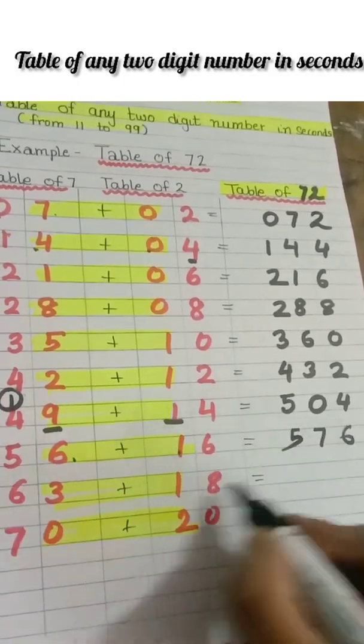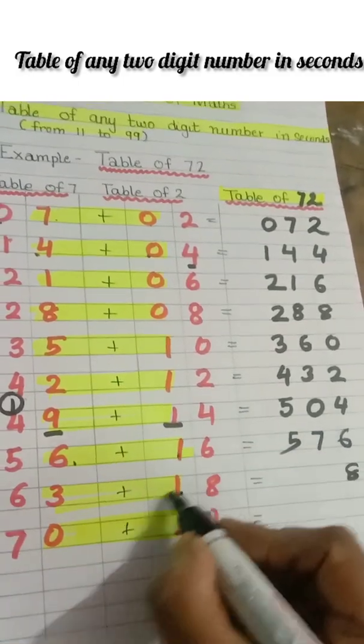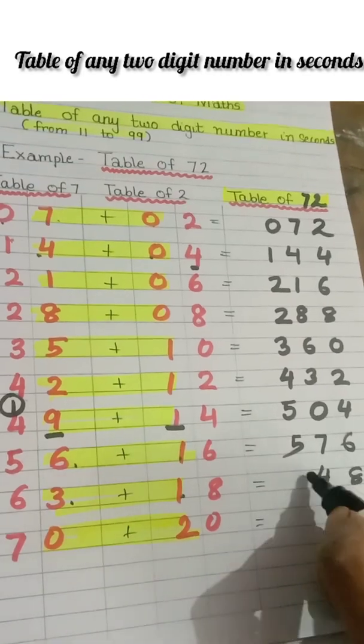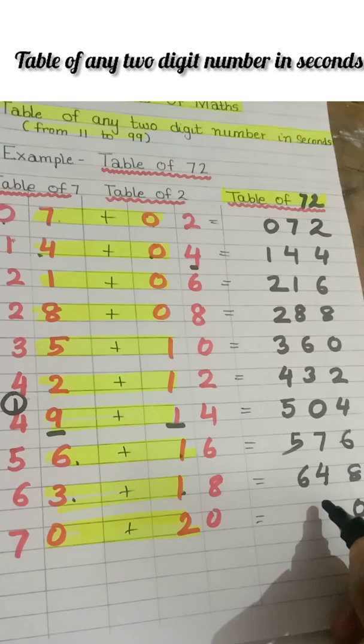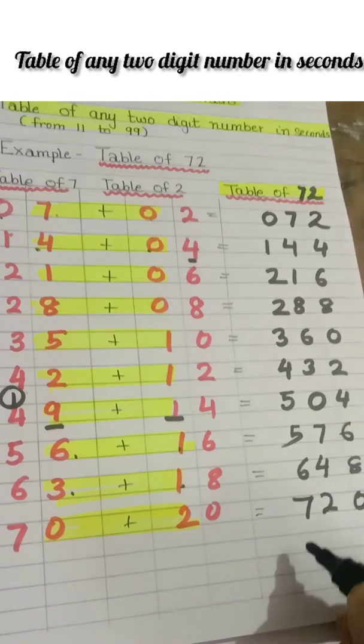3 plus 1 is 4 and 6. Then 0, 2 plus 0 is 2 and 7. So this is the table of 72 which you wrote in seconds.